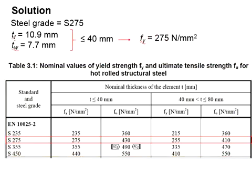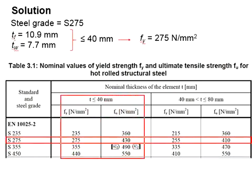It is found that the thickness of the flange and thickness of the web are less than 40 mm. In this case, for grade 275 and thickness less than 40 mm, the FY will be 275.